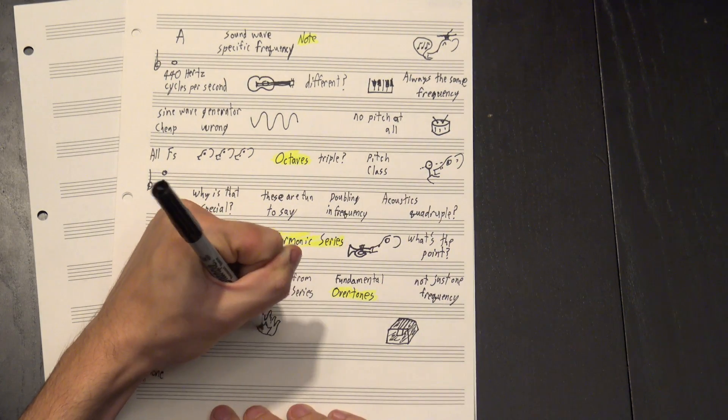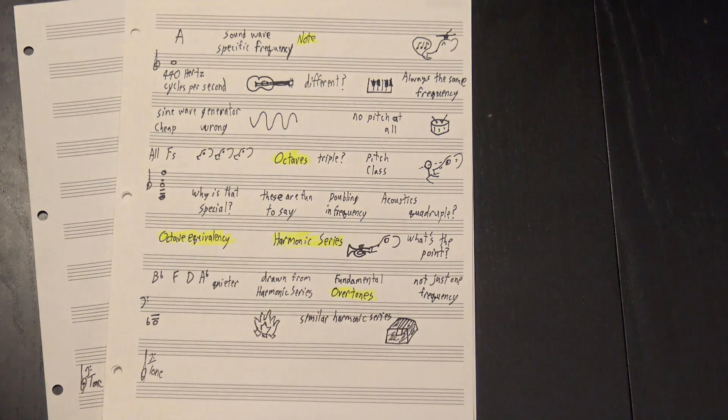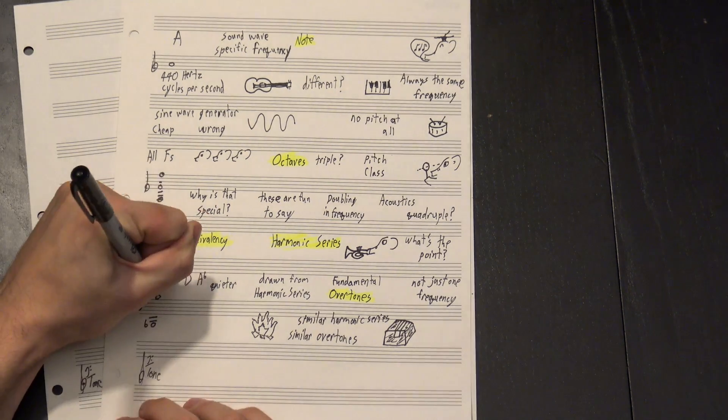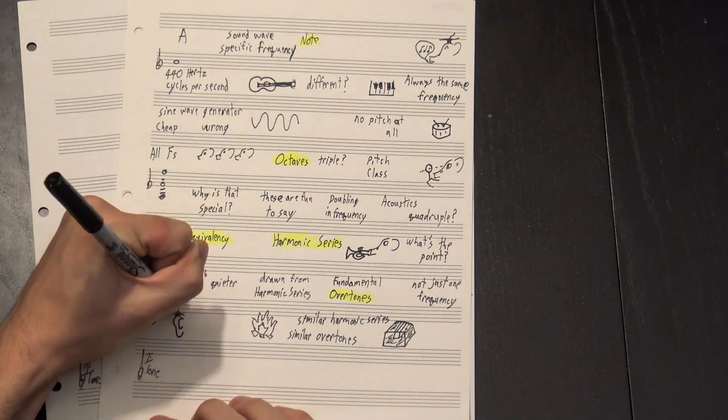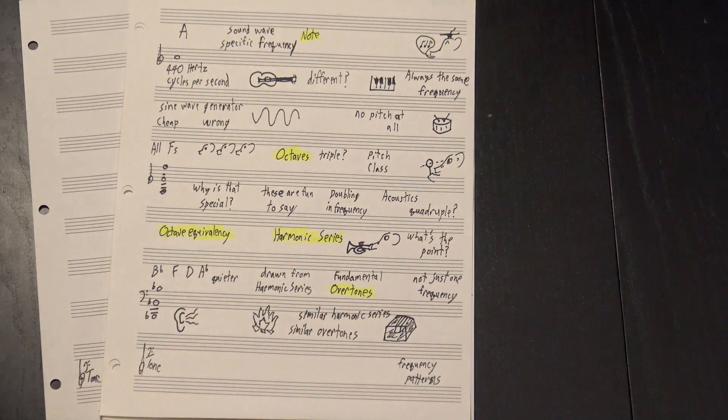Octave equivalency arises partly because of these. Notes an octave apart have very similar harmonic series, so they produce almost identical overtones. In fact, every overtone of this note also exists over this one. Your ear hears them as a pitch class because there's really not much difference in the frequency patterns you're picking up.